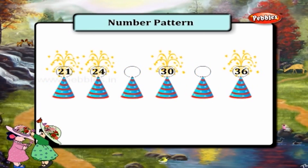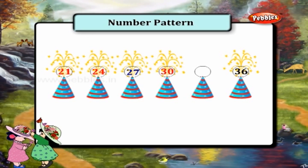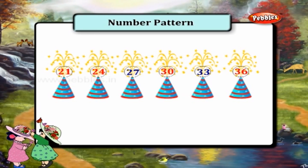Let us look at the next pattern: 21, 24, 27, 30, 33, 36. This pattern skips two numbers.